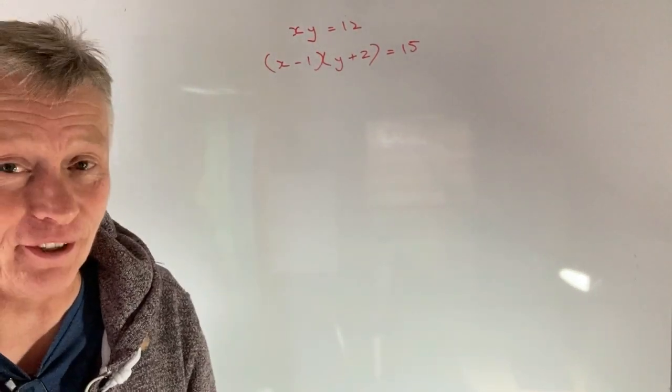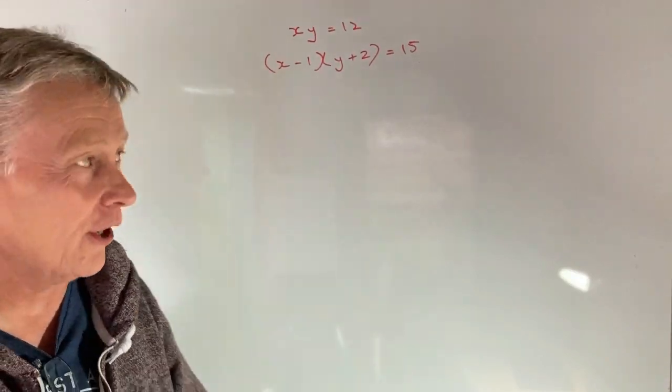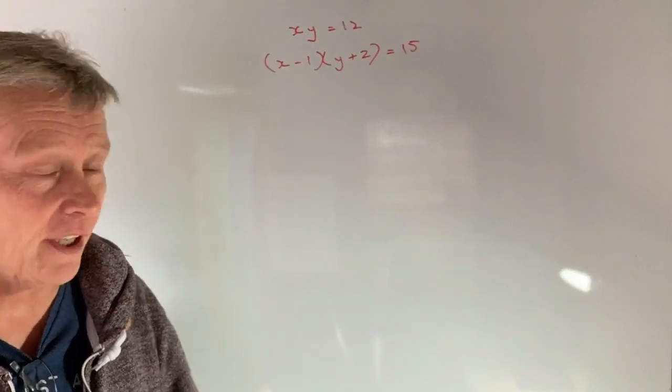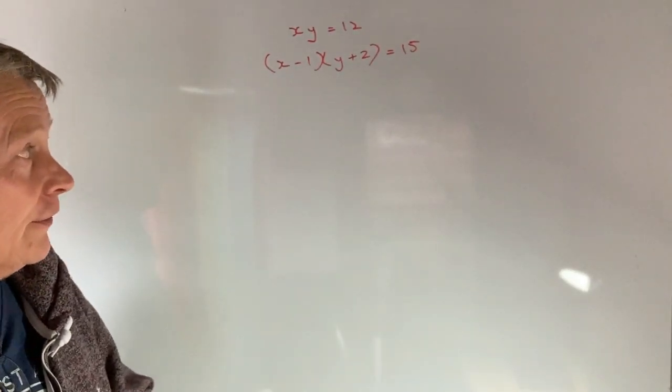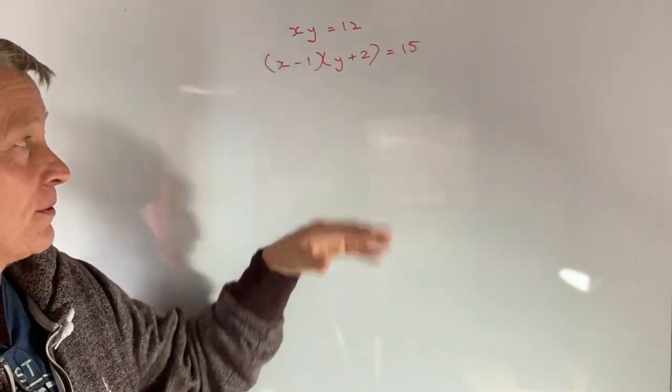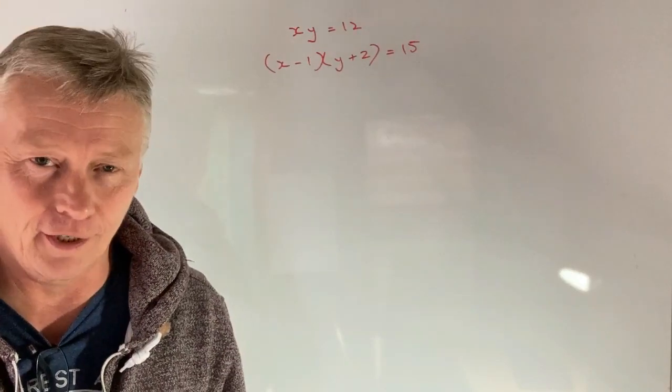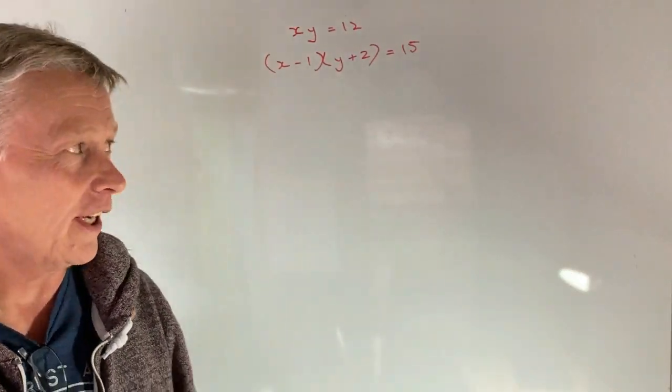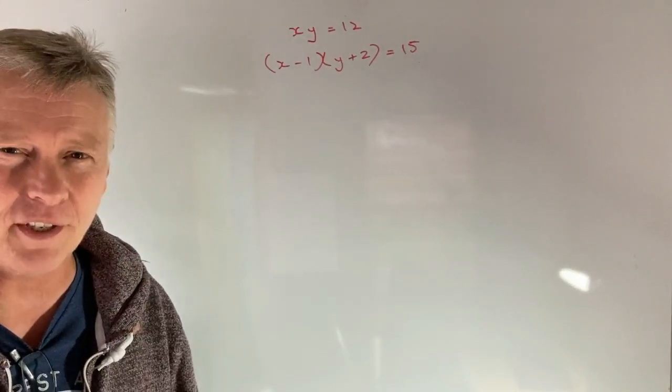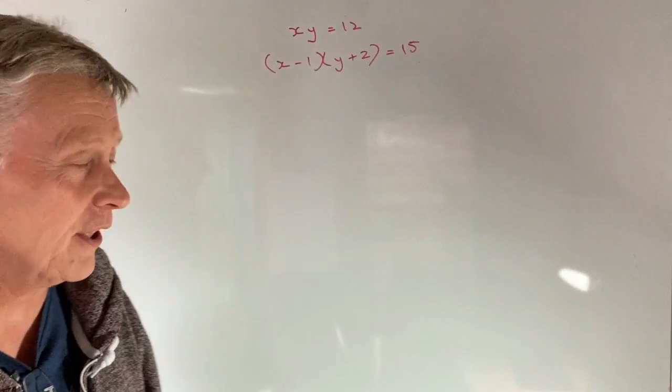Hi, in this particular video we're going to look at a slightly more complex version of solving by substitution. In this one we've got xy equals 12 and then we've got x minus 1 multiplied by y plus 2 equals 15, and we're being asked to find the values of x and y. So a little bit more challenging. I'm probably aiming at roundabout grade 6, grade 7. But once you get the hang of this you should be okay with it.